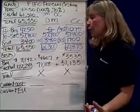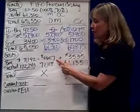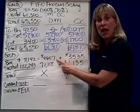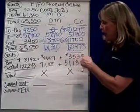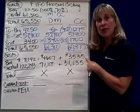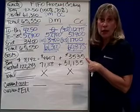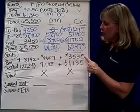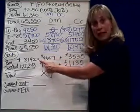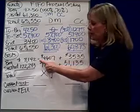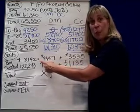This particular problem told me that beginning inventory had $4,607 of direct material costs associated with it, and beginning inventory had $3,535 of conversion — meaning labor and overhead. So if I add these together, I find that the beginning balance in the work in process account was $8,142. That's the BB, or the beginning balance.